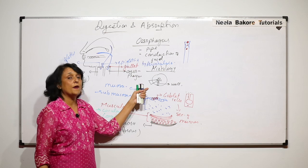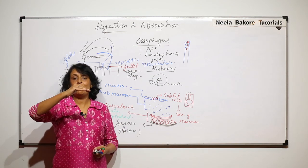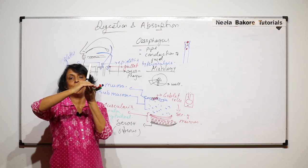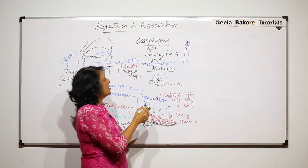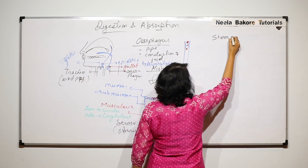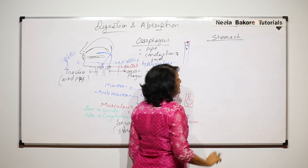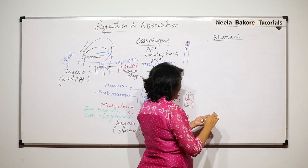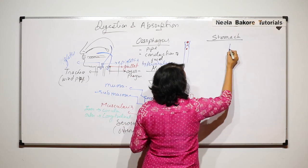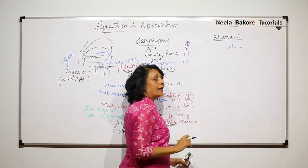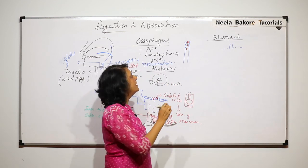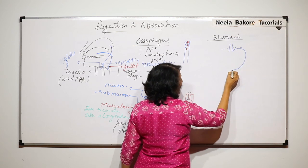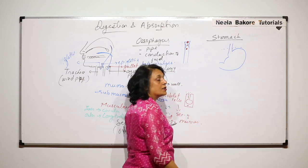The esophagus opens into the stomach, which is located under the diaphragm in the abdominal cavity. The esophagus penetrates the diaphragm and below it is the stomach — a bag-like structure.